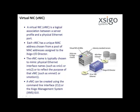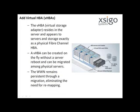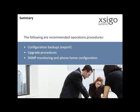Each VNIC has a unique MAC address chosen from a pool of MAC addresses assigned to the SEGO IO Director. The VNIC name is typically chosen to mimic a physical Ethernet interface name, such as VNIC1 or VNIC2, or to reflect the purpose of that VNIC, such as VMNet1 or VMotion1. A VNIC can be created using the command line interface or the SEGO Management System GUI. A virtual HBA represents a logical association between a server profile and a physical Fiber Channel port. Each VHBA has a unique worldwide name chosen from a pool of worldwide names assigned to the SEGO IO Director. The VHBA name is typically chosen to mimic a physical Fiber Channel interface name, such as VHBA1 or VHBA2. A VHBA can also be created using the command line interface or the SEGO Management System GUI.